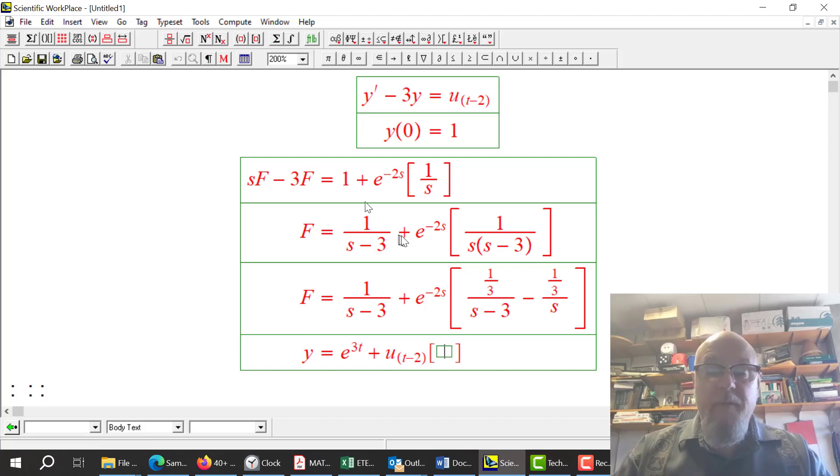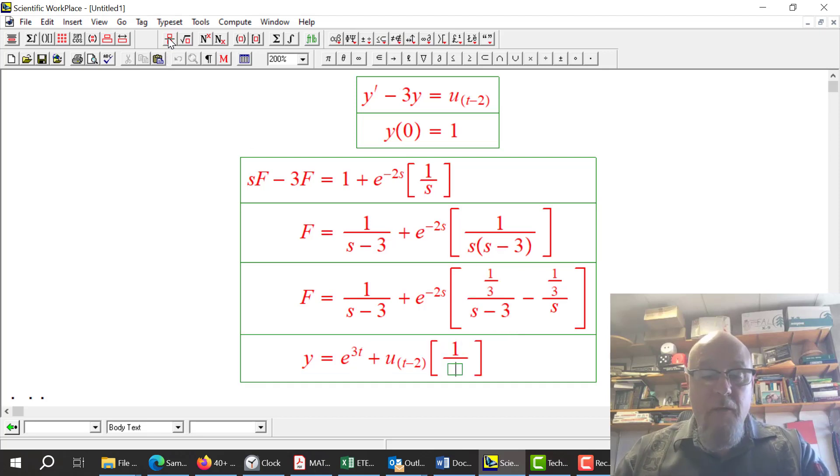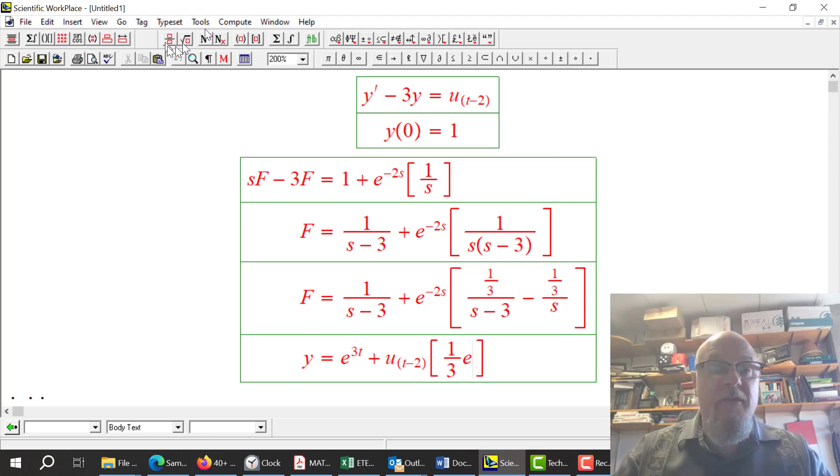And then the square bracketed piece. On its own, this would be 1 third e to the 3t. So on its own, this would be 1 third e to the 3t. And a third over s on its own would just be a third.